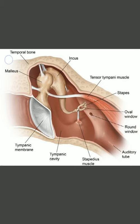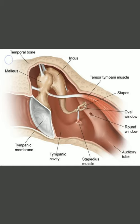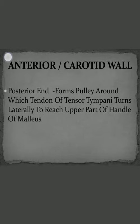In this figure you can see the anterior wall with the auditory tube and tensor tympani. The tensor tympani muscle — its tendon turns laterally and inserts into the upper half of the handle of the malleus. The posterior end of the processus cochleariformis forms a pulley around which the tendon of tensor tympani turns laterally to reach the upper part of the handle of malleus.